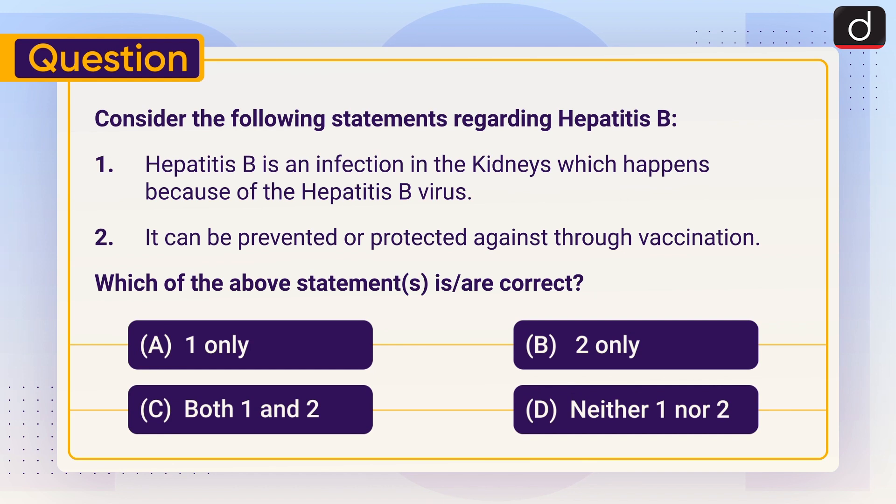Now it's time for the practice question. Consider the following statements regarding Hepatitis B: 1) Hepatitis B is an infection in the kidneys which happens because of the Hepatitis B virus. 2) It can be prevented or protected against through vaccination. Which of the above statements is or are correct — one only, two only, both one and two, or neither one nor two? Send your answer in the comment section. Stay tuned for the next episode. Thanks for watching, have a great day.